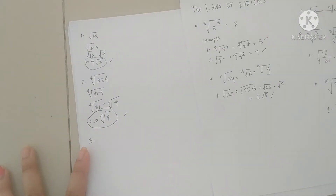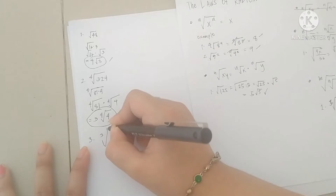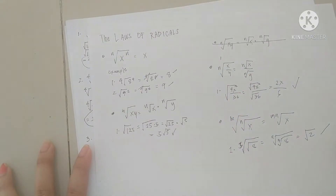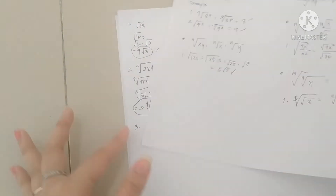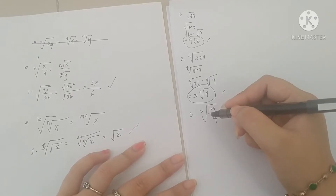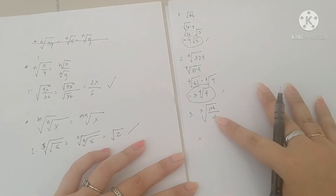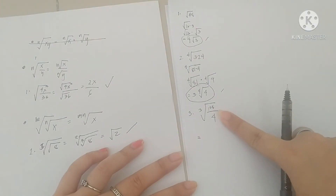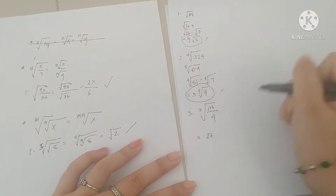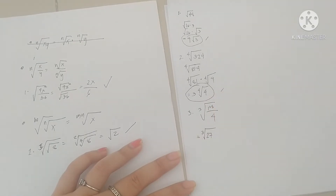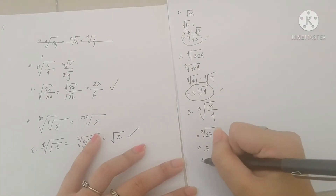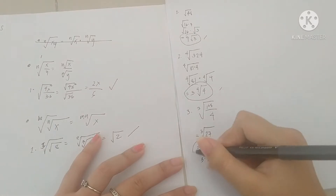Number 3: we have cube root of 108 over 4. This one falls in the quotient law. Instead of using the quotient law form directly, we're just going to divide first: 108 divided by 4 equals 27. Then copy the radical — cube root of 27. Cube root of 27 has a root, so it would be 3, because 3 times 3 times 3 equals 27. So 3 will be our final answer.